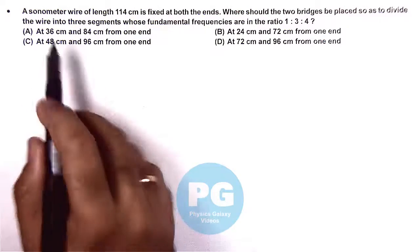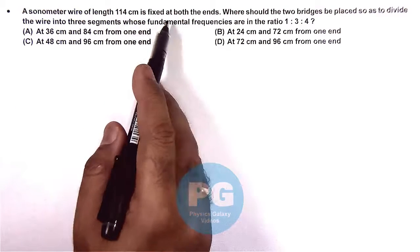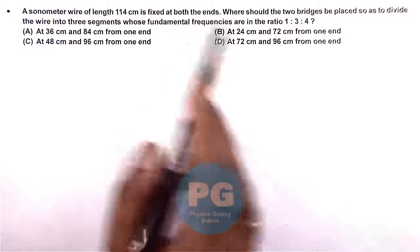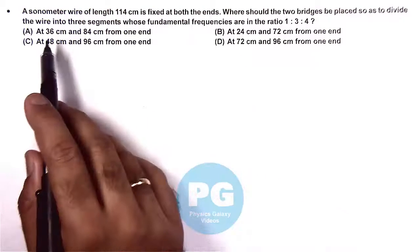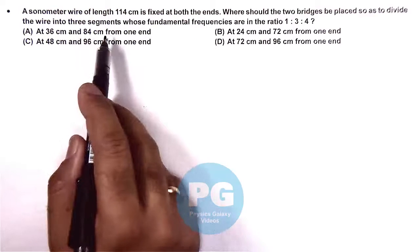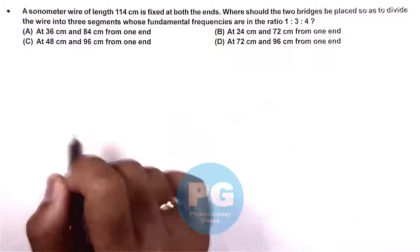In this question, we are given a sonometer wire of length 114 centimeters fixed at both ends. We need to find where two bridges should be placed to divide the wire into three segments whose fundamental frequencies are in the ratio 1:3:4.